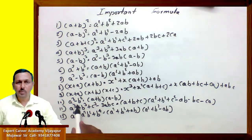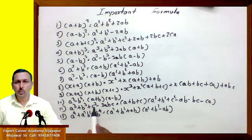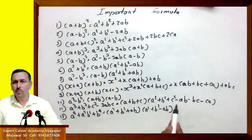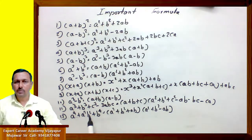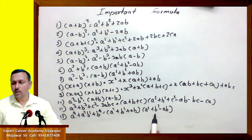Tenth one: a square minus b square equals (a plus b) into (a minus b). Eleventh one: a cube plus b cube plus c cube minus 3abc equals (a plus b plus c) into (a square plus b square plus c square minus ab minus bc minus ca). Twelfth one: a raised to 4 minus b raised to 4 equals (a square plus b square plus ab) into (a square plus b square minus ab).